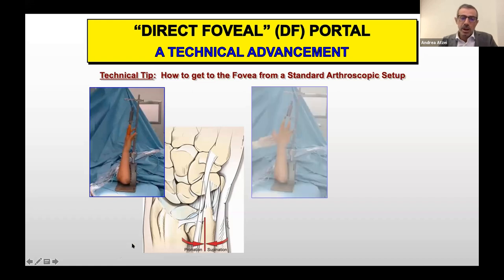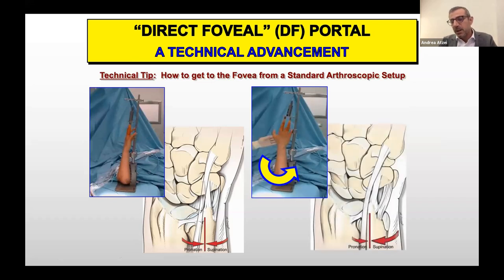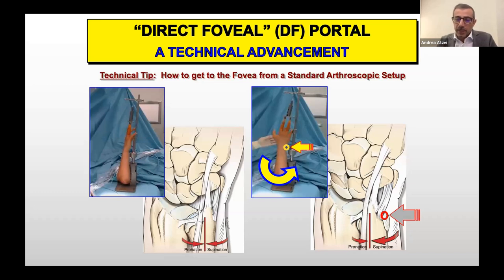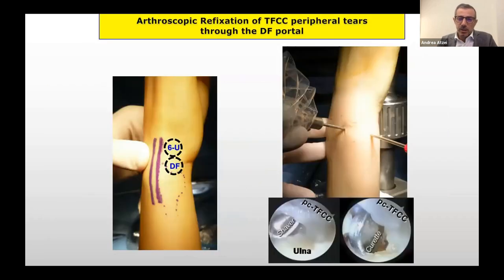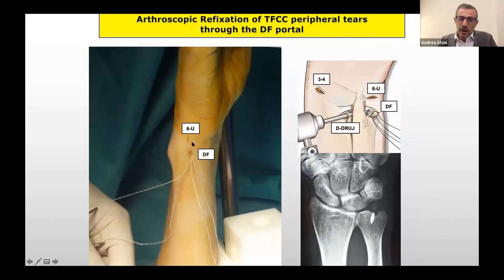In the standard arthroscopic setup the forearm is in neutral pronosupination, making the foveal area difficult to reach. Instead, placing the forearm in full supination displaces the ECU tendon and ulnar styloid dorsally, providing easy access to the fovea, which lies just palmar to the ulnar styloid when the wrist is in full supination. The DF portal can be used to shave and refresh the foveal area and also to introduce the anchor. The sutures coming out of this portal can then be introduced back into the joint to perform the repair.